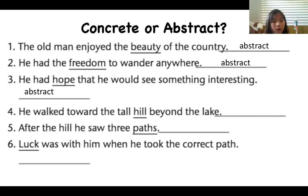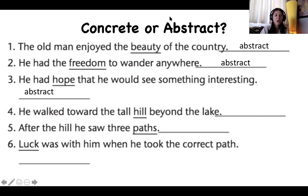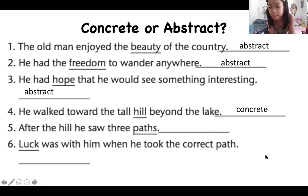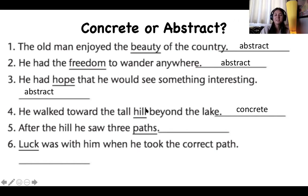Number four, Katie reads: 'He walked toward the tall hill beyond the lake.' Have a look at the word hill — it's underlined. Is that a concrete or abstract noun? Nancy: I think this is a concrete noun. How do you know? Because we can see hills — it is matter, visible to sight. It's not like air or a feeling. We are able to see a hill, touch it, and if we wanted to, we could even taste it — though it wouldn't be very nice.